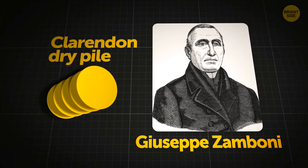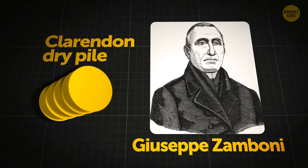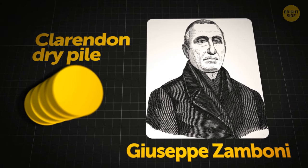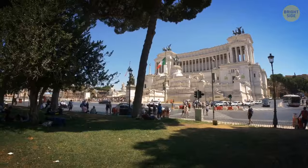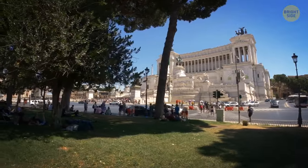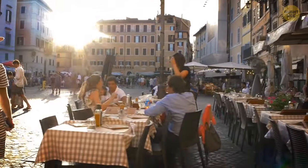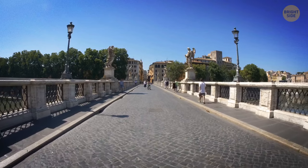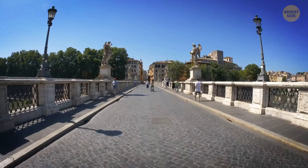Giuseppe Zamboni, an Italian physicist, was the first to make these dry piles at the beginning of the 19th century. The man's last name sounds familiar to hockey fans. But the inventor of the Zamboni machine, Frank Zamboni, lived more than a century after his Italian namesake.